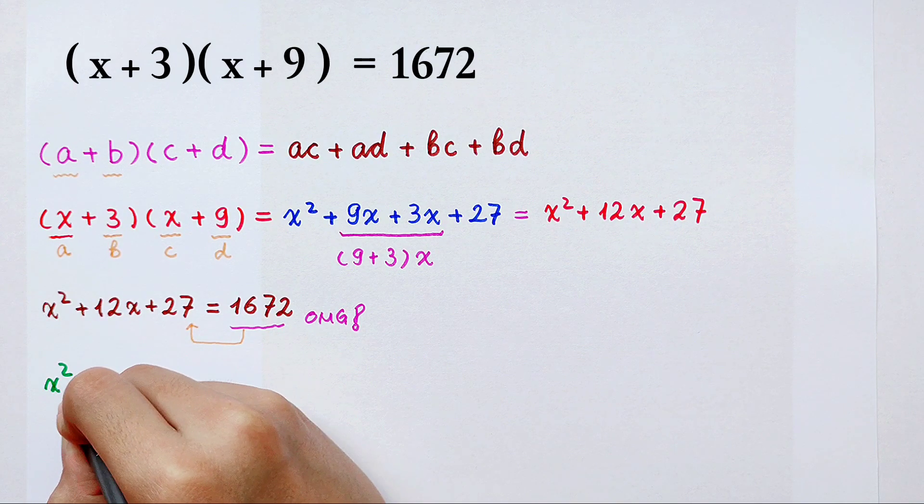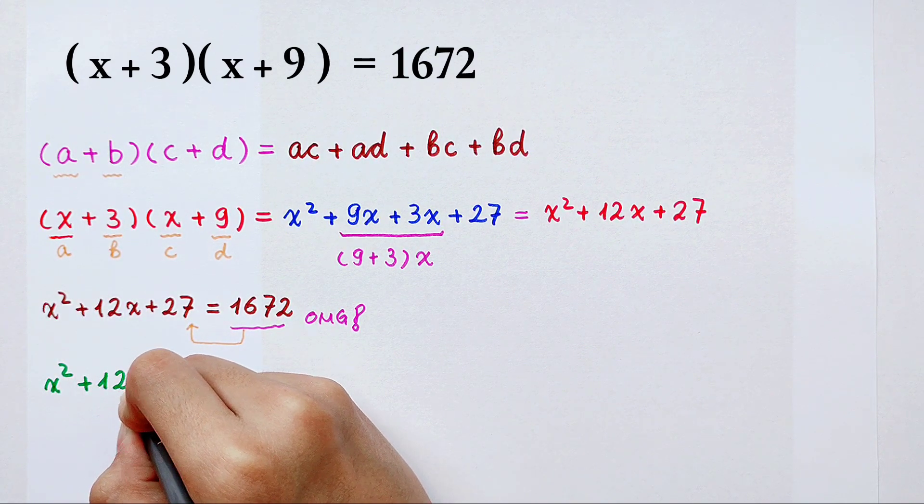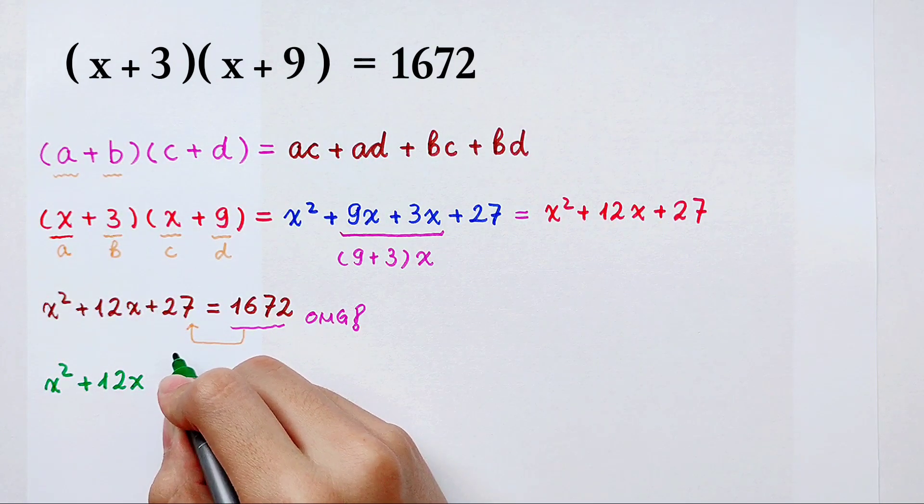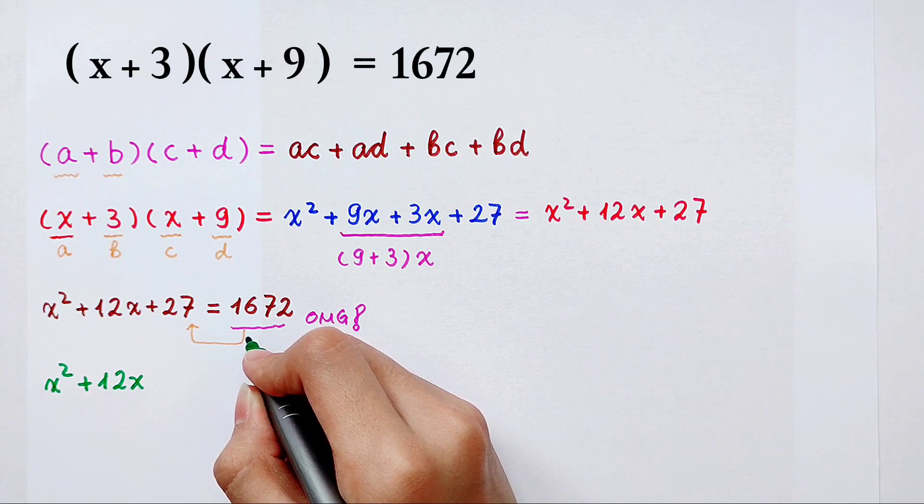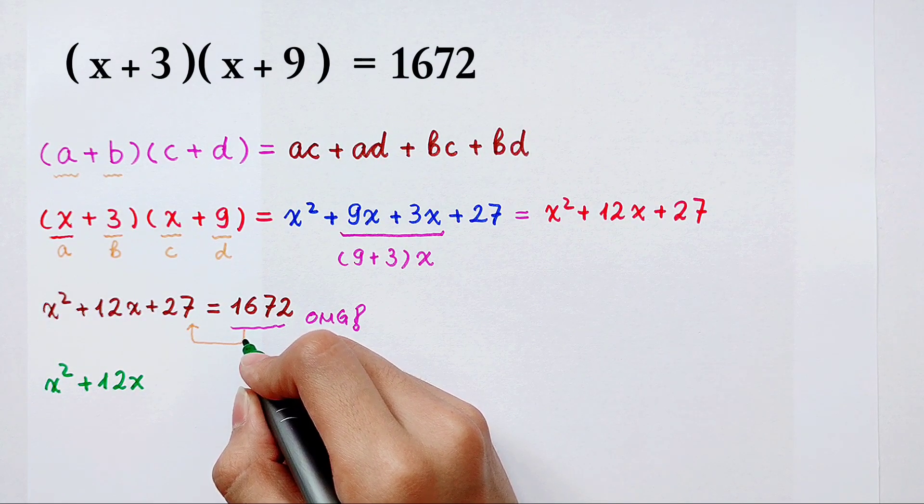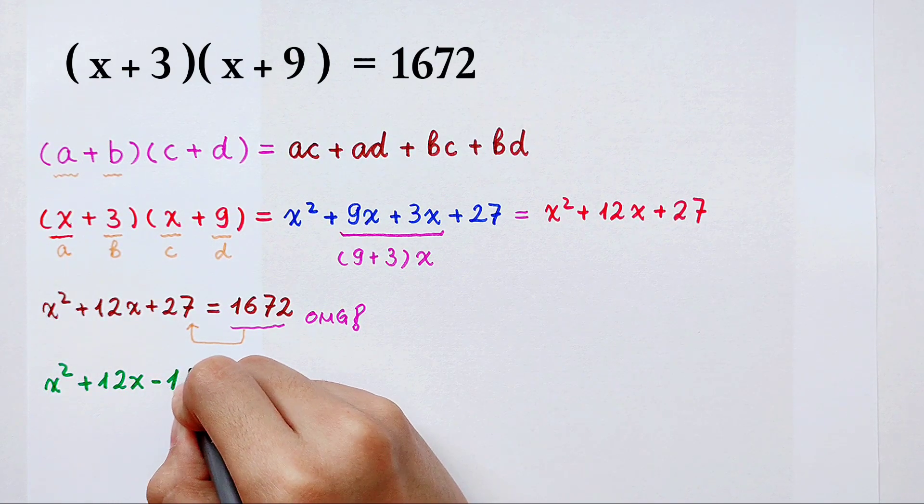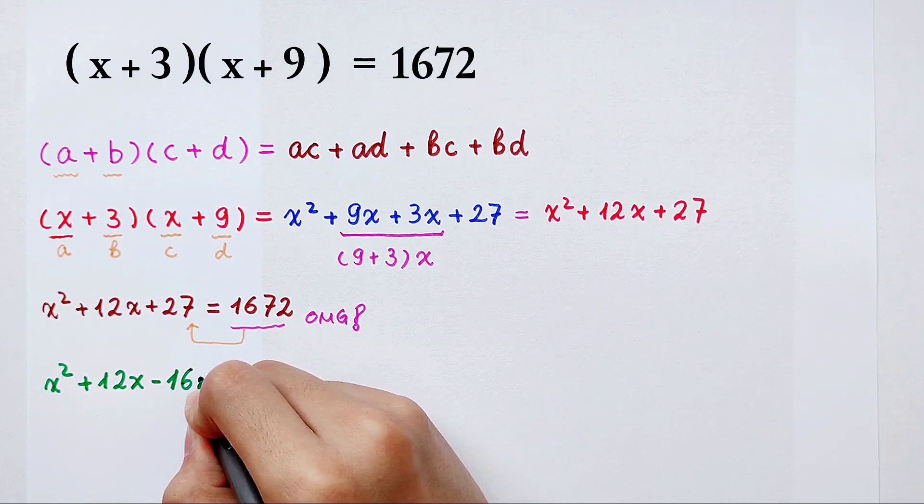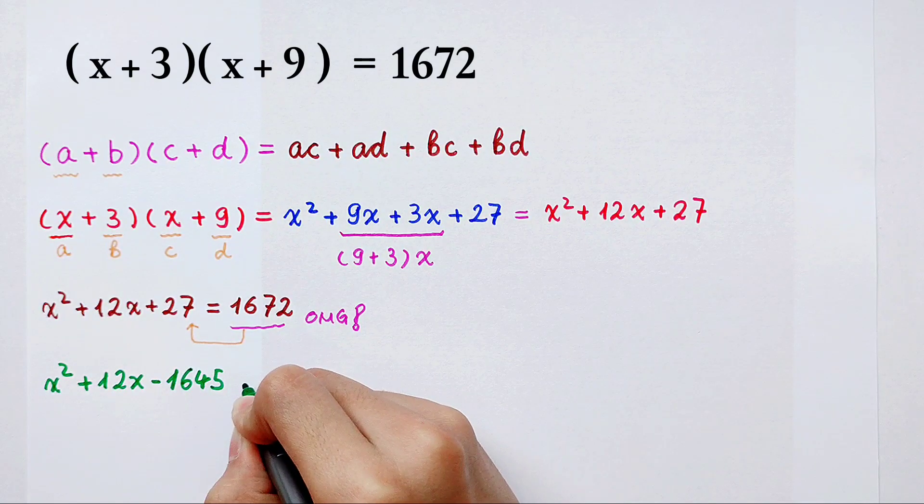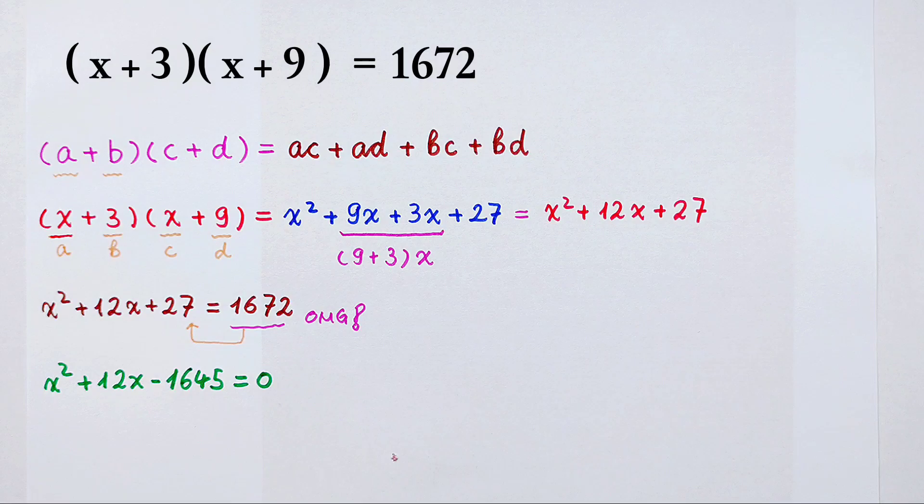x squared then plus 12x, then plus 27, then minus 1672. You should be able to calculate it. It's negative 1645. And the right side is 0.